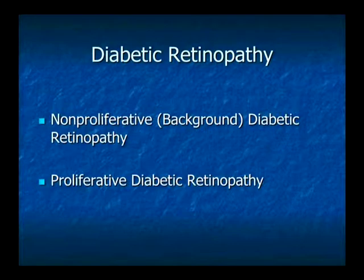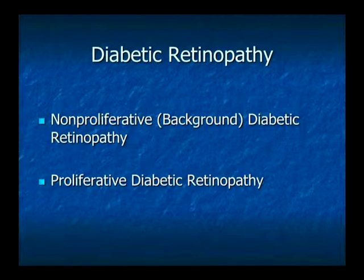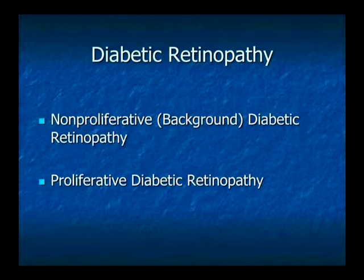There are two main forms of diabetic retinopathy: the milder form, called the non-proliferative or background form, and then the proliferative form, which is the type where you can get abnormal blood vessels growing.